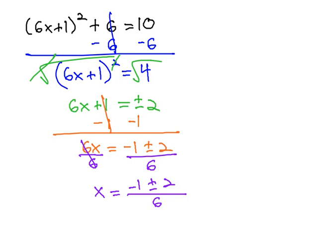Now that the x is alone, we'll actually take care of what that plus or minus means. That means in one case we're going to add, and in another case we're going to subtract the numerator. As we do that, negative 1 plus 2 is positive 1 over 6.